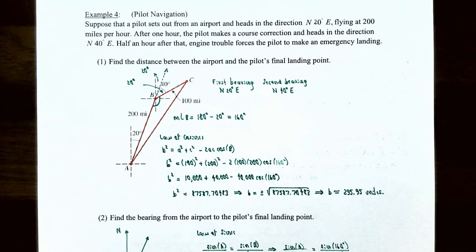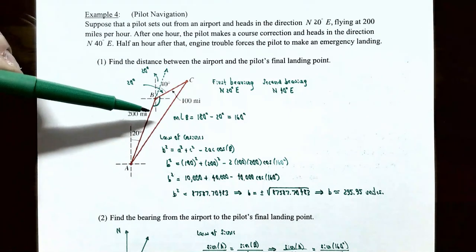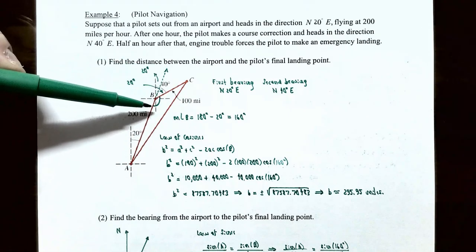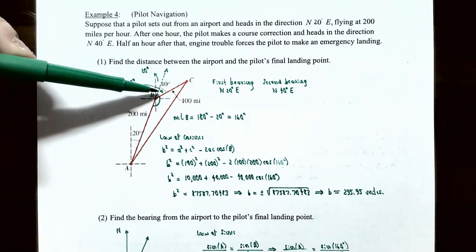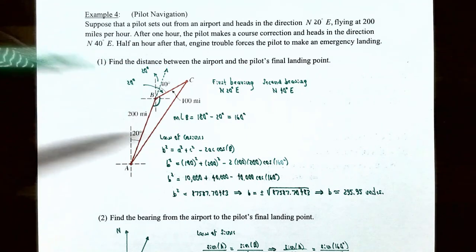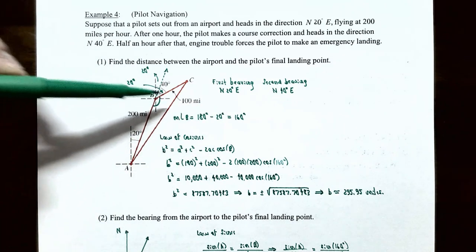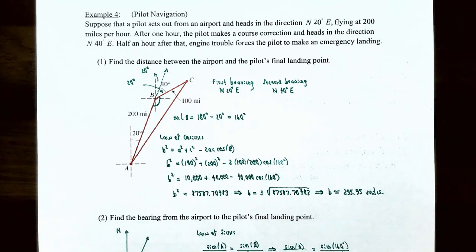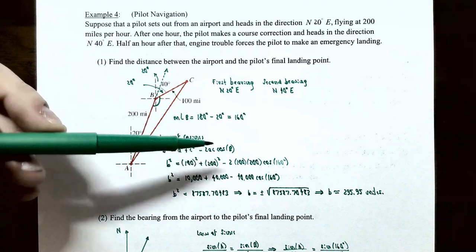The measure of angle B in the triangle is 180° − 20° = 160°, because continuing in the N20°E direction forms a straight line through B, making angle B and the 20° bearing supplementary. We now have an SAS triangle with sides 100 and 200 miles and included angle B = 160°, so we use the law of cosines.